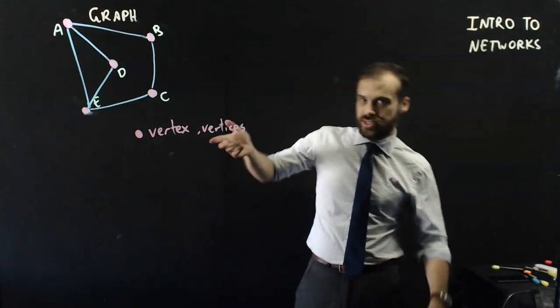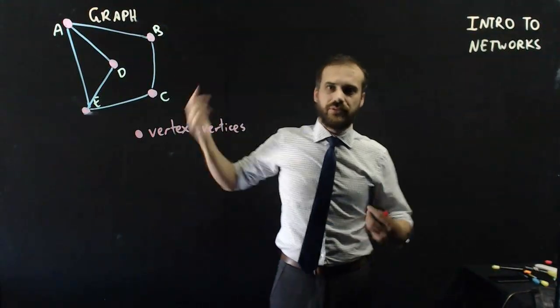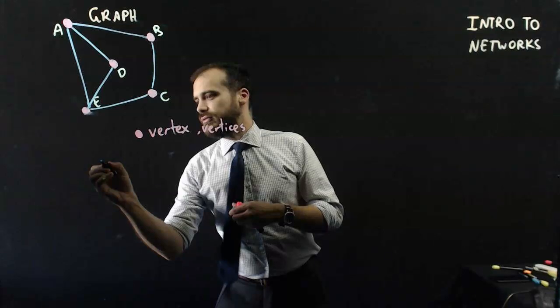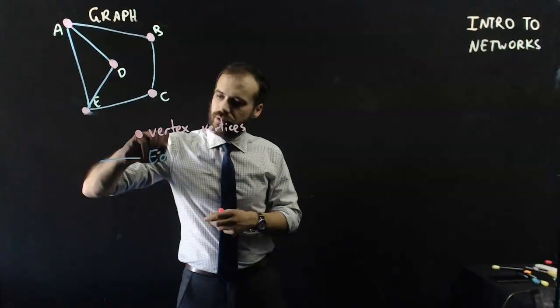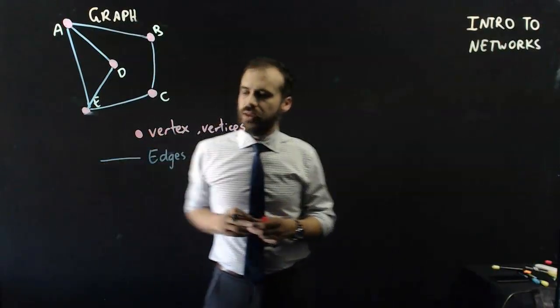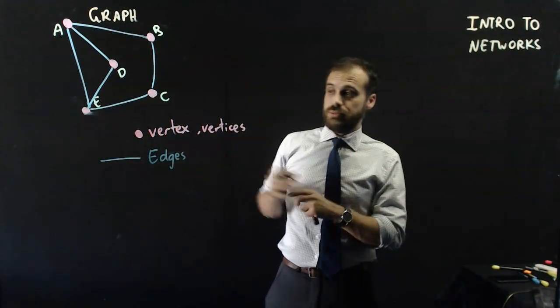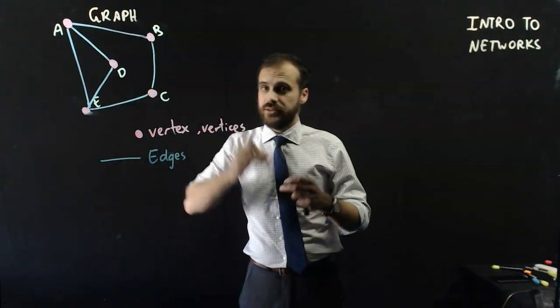All right, so they're our towns, they're our little people, whatever they are. Next up, we have our roads, if you like, and we call those edges. All right, so we have a graph, and the graph is made up of vertices and edges.